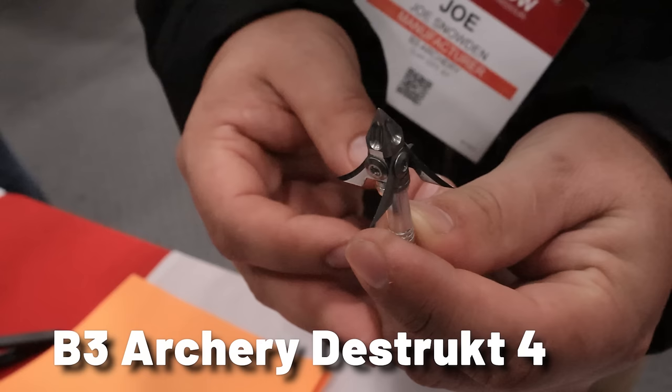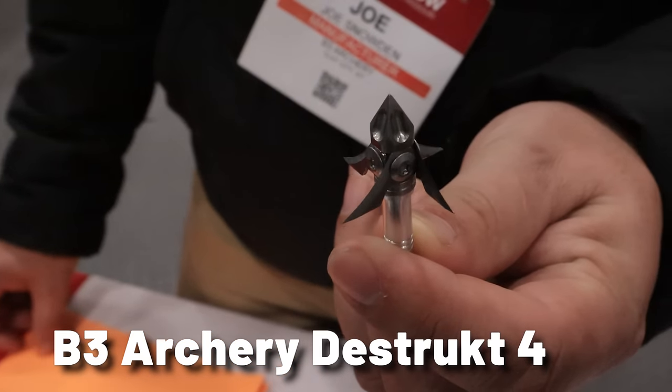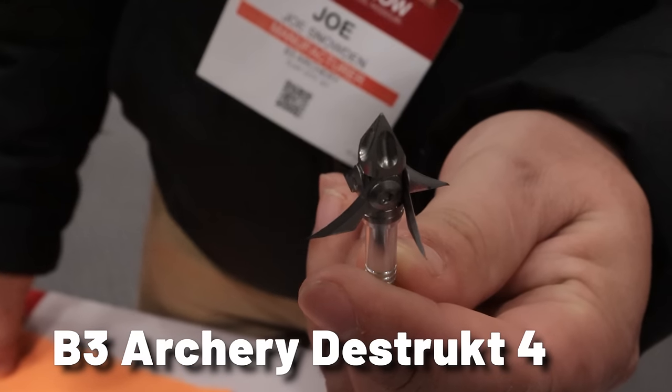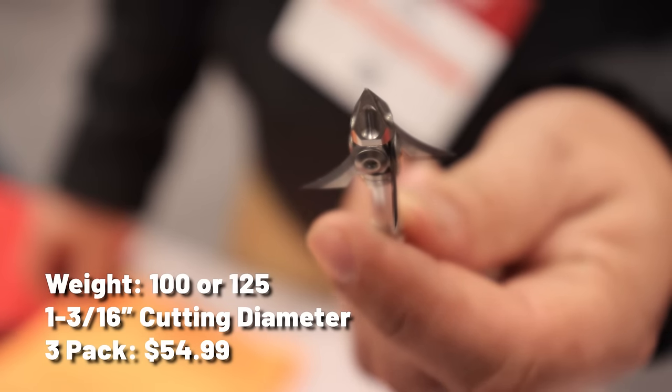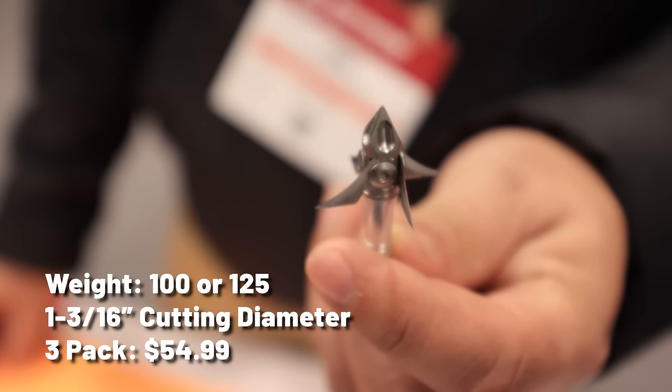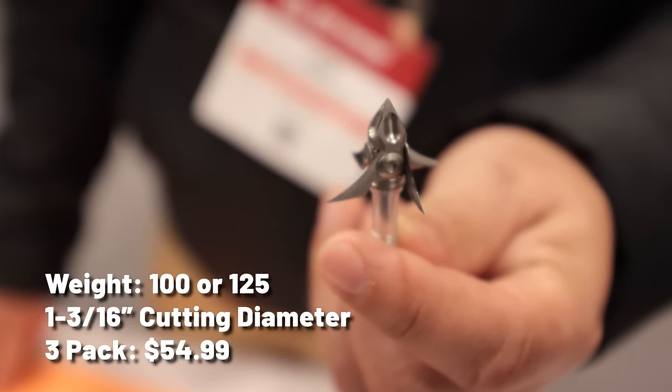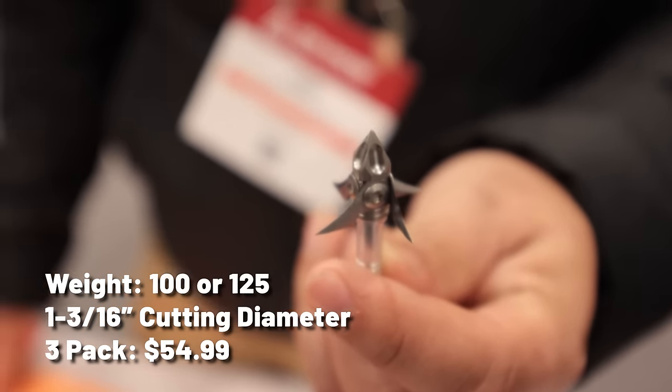B3 Destruct 4. The curved blades of the Destruct series are designed to cut faster and penetrate deeper than traditional fixed-blade broadheads. As the name implies, the Destruct 4 is a four-blade, fixed-blade head that packs a 1-3-16-inch cutting diameter, thanks to its 39,000-thick stainless steel blades. They're available in three packs in either 100 or 125 grains and retail for $54.99.